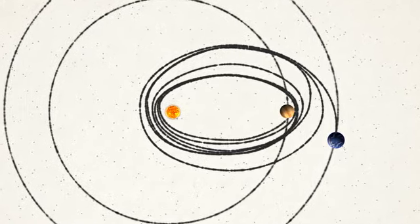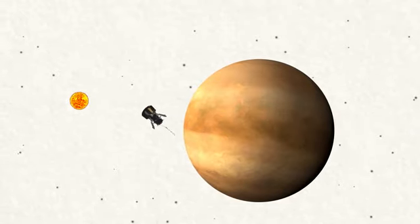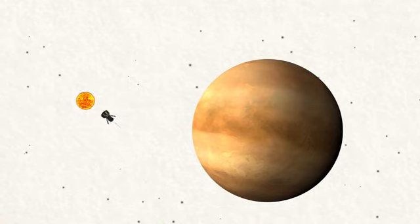In this case, rather than speeding up the spacecraft, as in a typical gravity assist, Venus slows down its sideways motion, so the spacecraft can get close to the Sun.